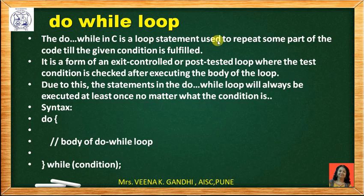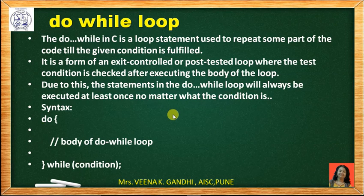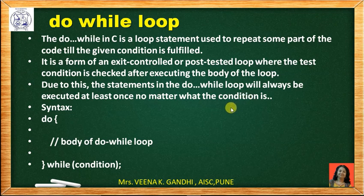Next is the do-while loop. The do-while loop is used to repeat some part of the code until some condition is satisfied. It is also known as exit control loop, bottom-tested loop, or post-tested loop, where the test condition is checked after executing the body of the loop. Due to this, the statements in the do-while loop will always be executed at least once, no matter what the condition is.